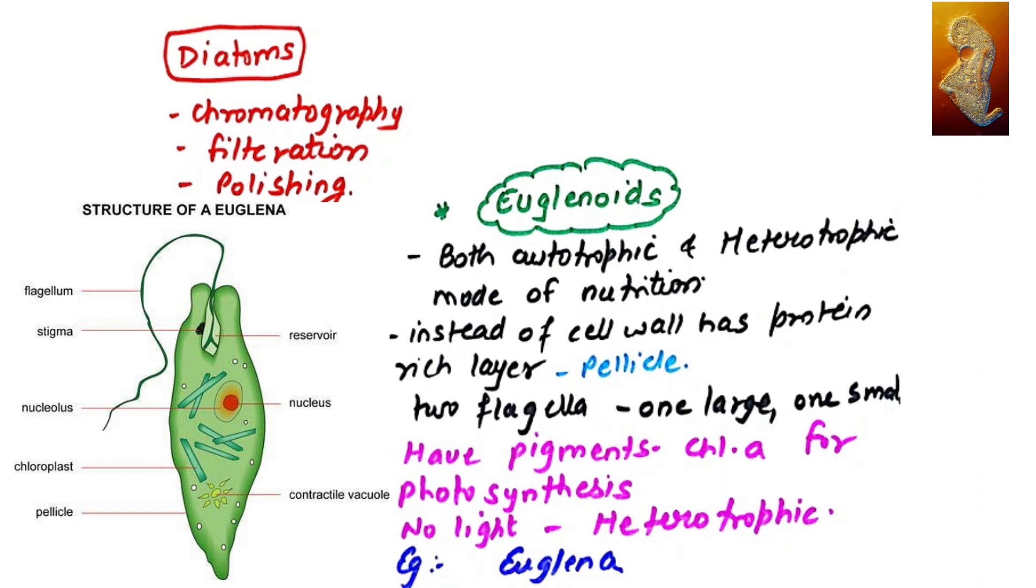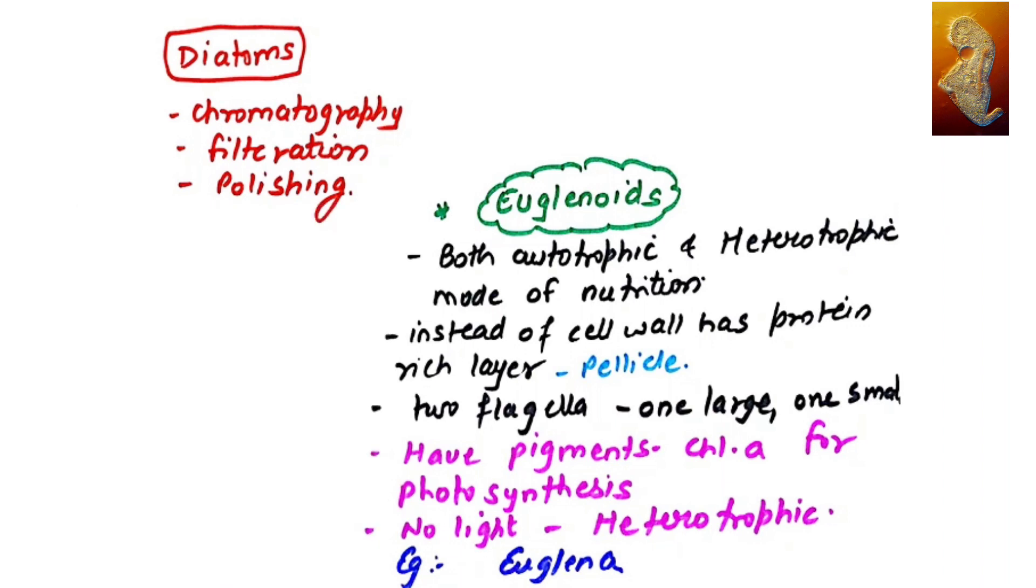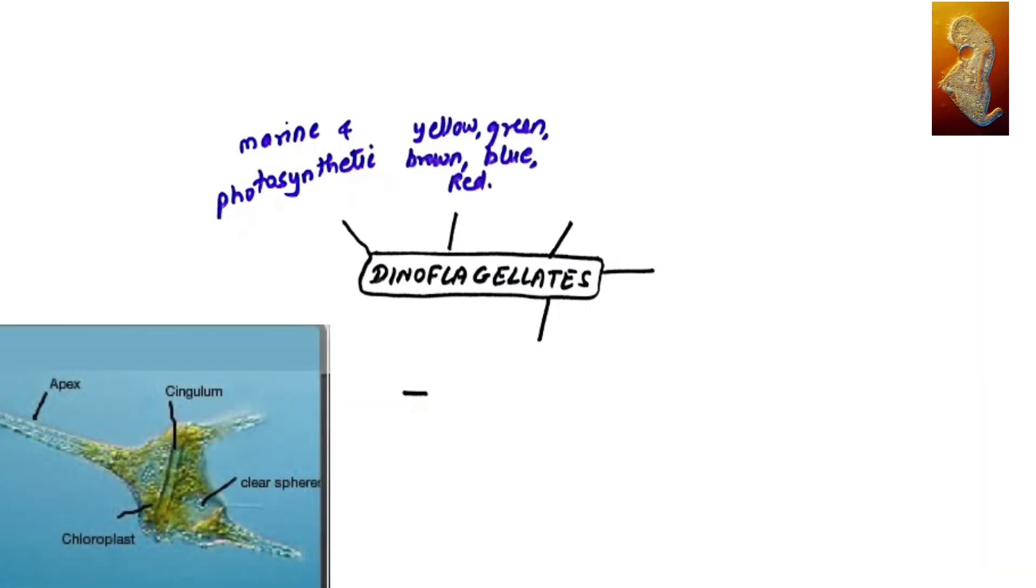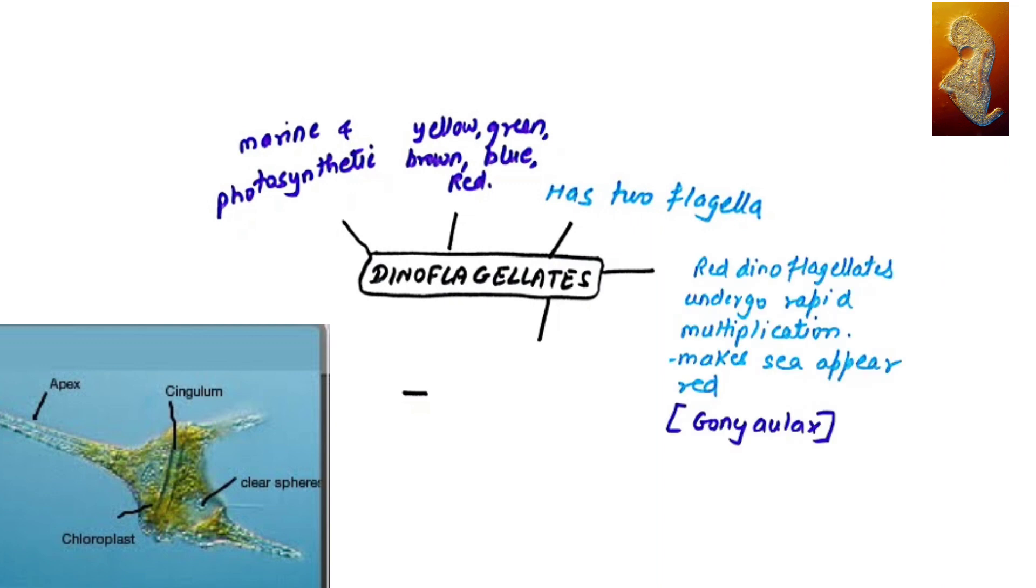When we talk about dinoflagellates, they are of different types. Some of them are marine and photosynthetic dinoflagellates. They are yellow, green, brown, blue, and even red in color. They have two flagella available. Red dinoflagellates undergo rapid multiplication sometimes and make the sea appear red. We say it's a red sea. Logically, the sea appears red. The sea is not red actually. It is the dinoflagellate which is undergoing rapid multiplication and makes the sea appear red. An example is Gonyaulax.